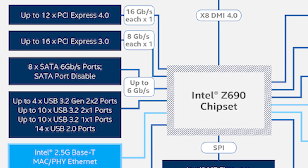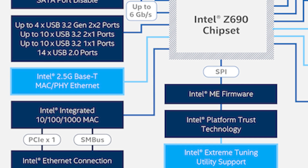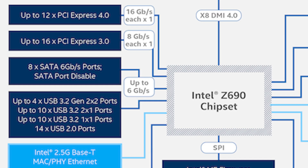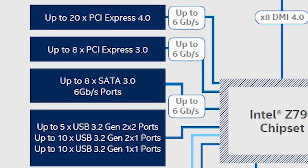Getting into the actual chipset: the Z690 has up to 12x PCI Express 4.0 and up to 16x PCI Express 3.0, as well as 8x SATA 6 gigabytes. As you go further down the list, you can see the different USB types and internet connectivity options. Over on the Z790 chipset block diagram side, you notice subtle differences: up to 20x PCI Express 4.0 and 8x PCI Express 3.0, versus the 16x PCIe 3.0 and 12x PCIe 4.0 on the Z690.